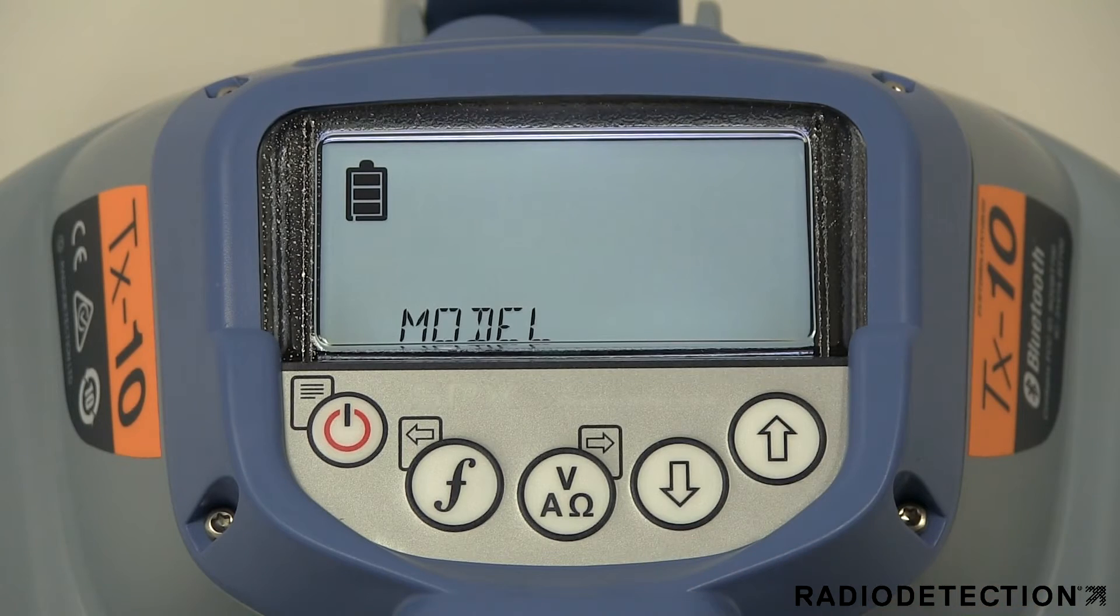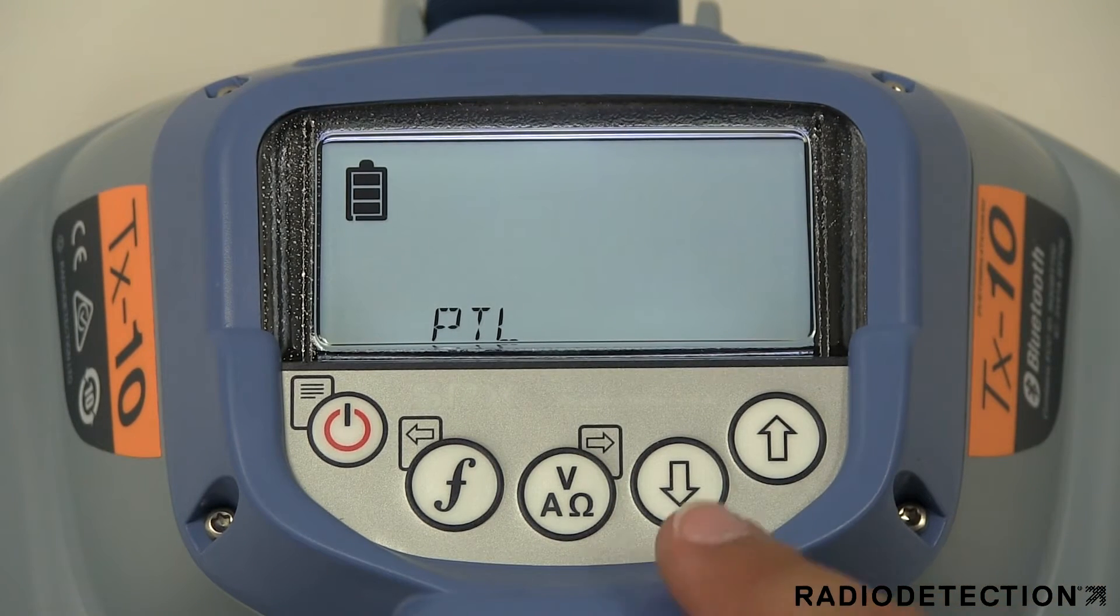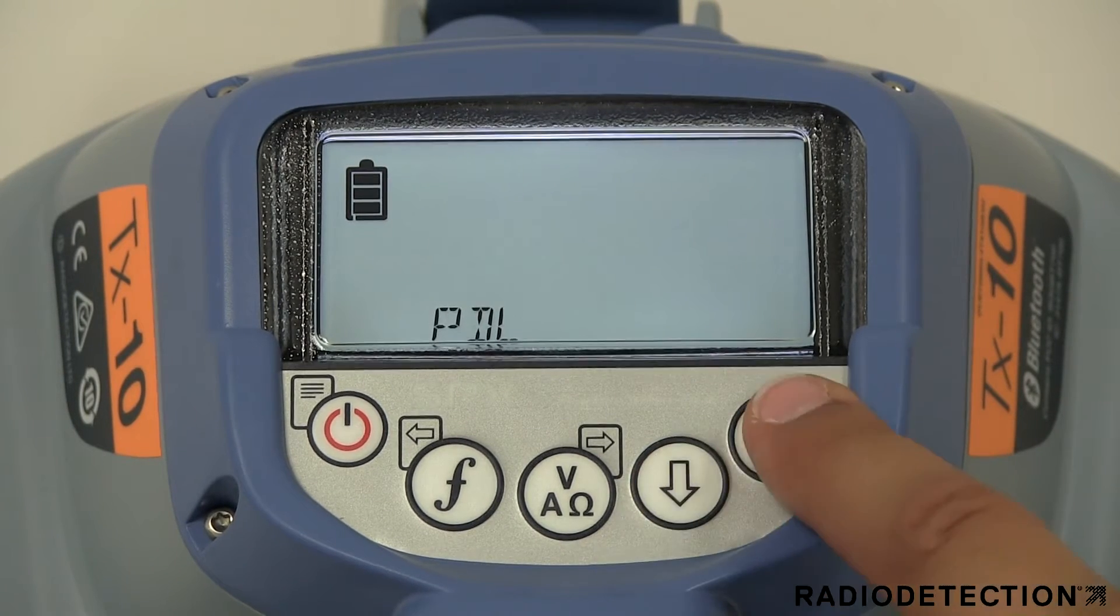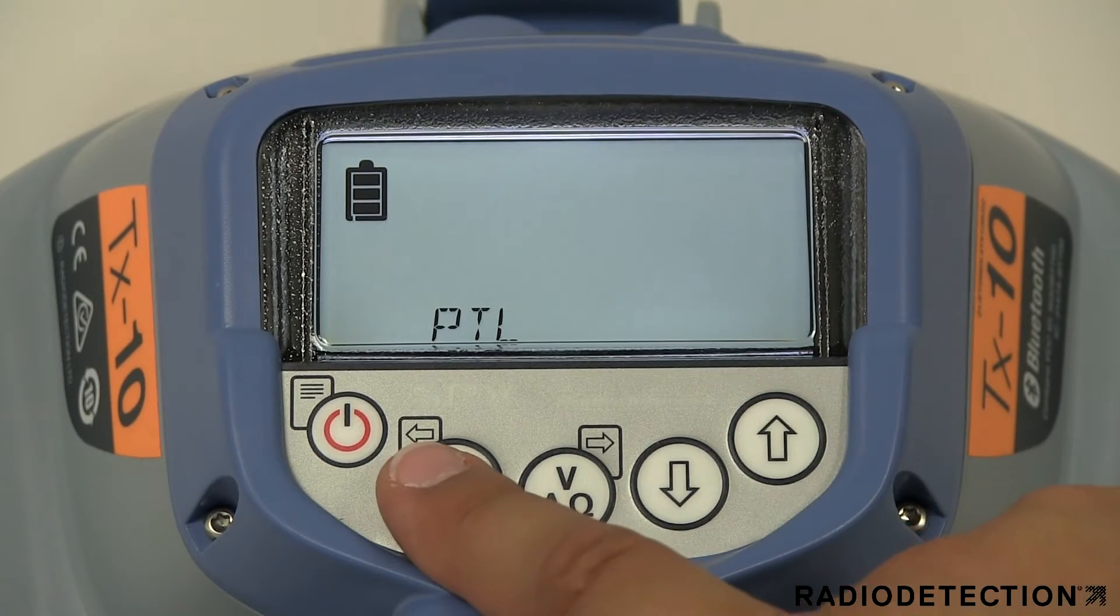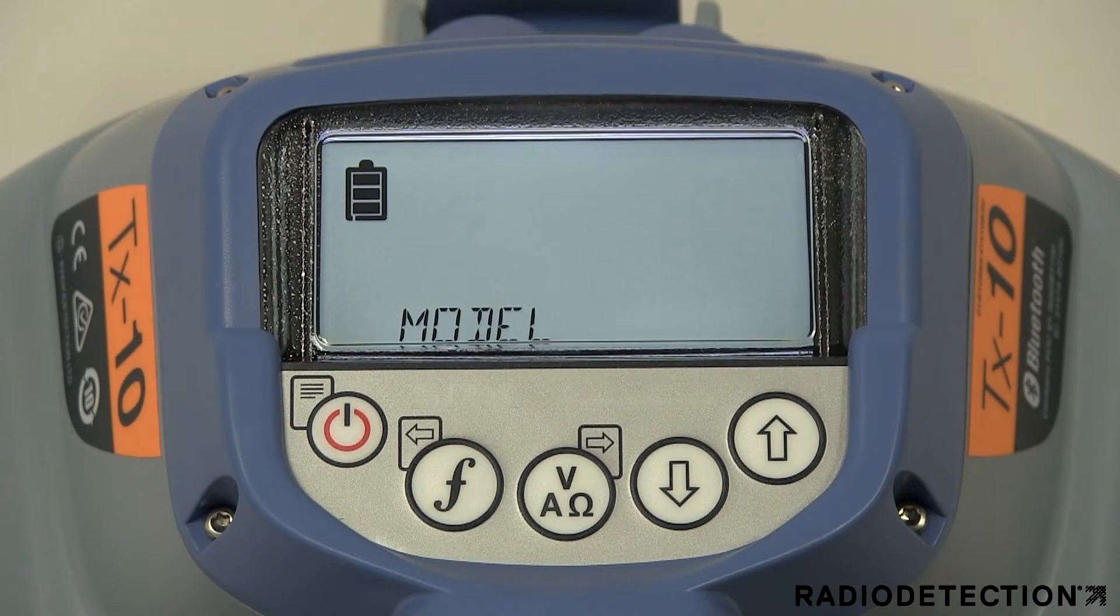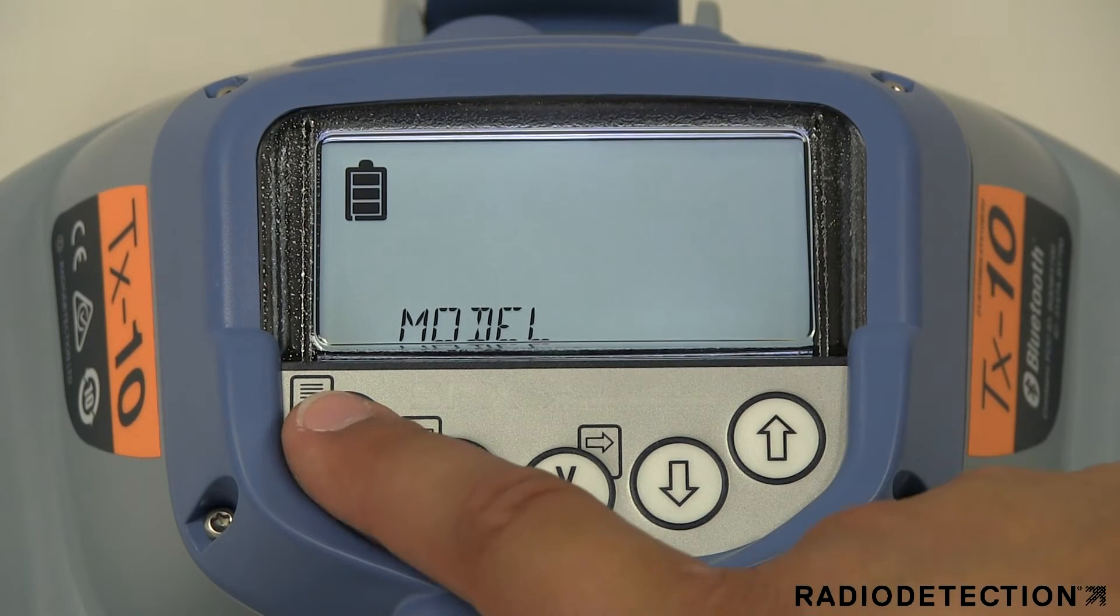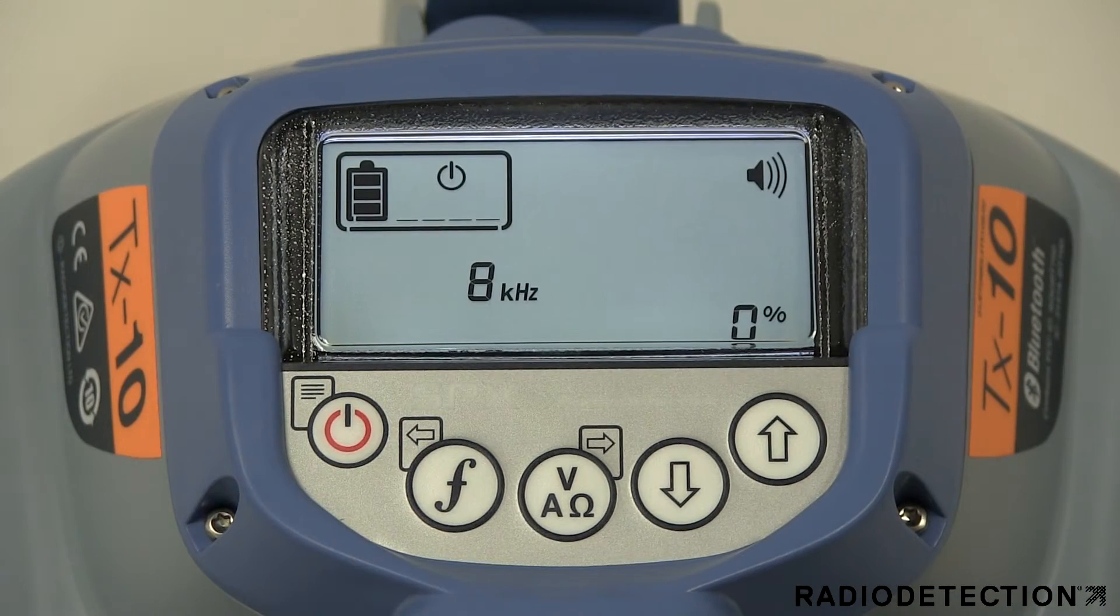Press the measure key to enter the options submenu. Use the up or down keys to scroll through the submenu options. Press the F key to confirm selection and return to the previous level or exit the menu. Press the power key briefly to return to the main operation screen.